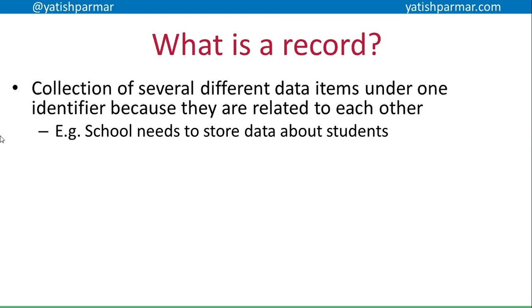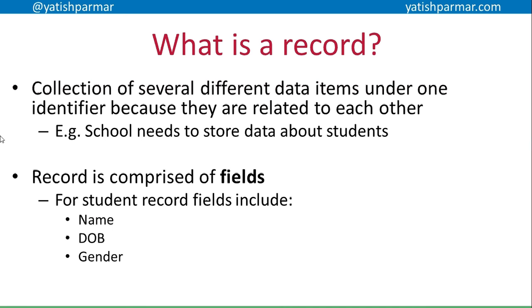A record is basically a collection of different data items under a single identifier, because all of those items of data are related to each other. A record is comprised of fields. For example, a student record would be comprised of name, date of birth, gender, form, and so on. Each of those different items of data can have different data types.